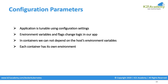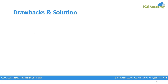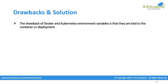When each container has its own environment variables defined in its image, making any changes to their values means we need to recreate the entire image — rewrite the Dockerfile, execute docker build, recreate the image, and redeploy. That was a drawback at the Docker level as well. In Docker, if we had to change anything, we had to rebuild the entire image.